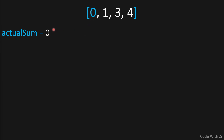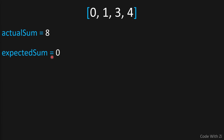We loop through the array and add the numbers together. So we start with zero plus zero, giving us zero. Then one plus zero, giving us one. Then three plus one, giving us four. Then four plus four, giving us eight. And we're done — our actual sum is eight.